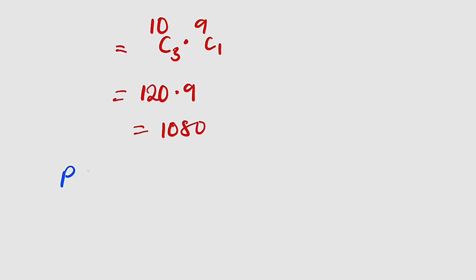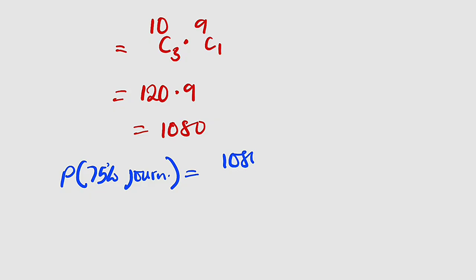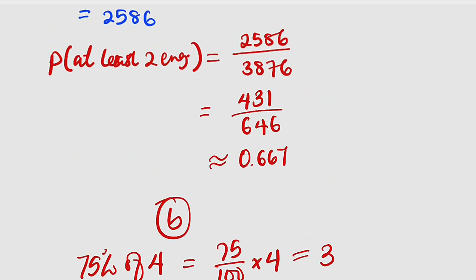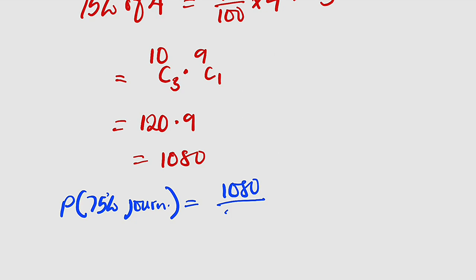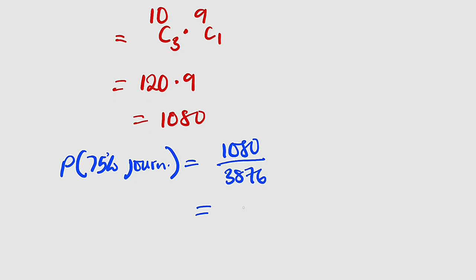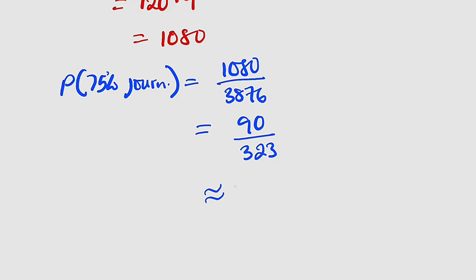Therefore, the probability that 75% are journalists equals 1,080 divided by the sample space 3,876. In simplest form this is 90/323, or in decimal to three decimal places, 0.279. This is the probability.